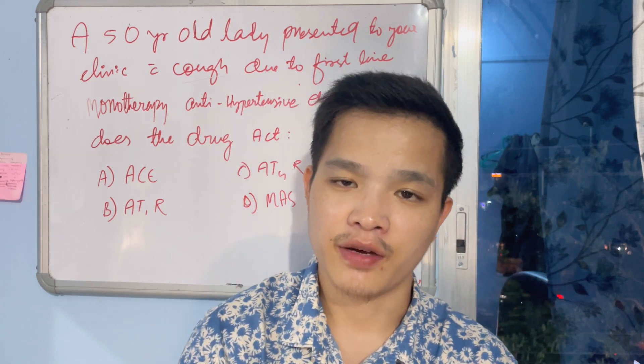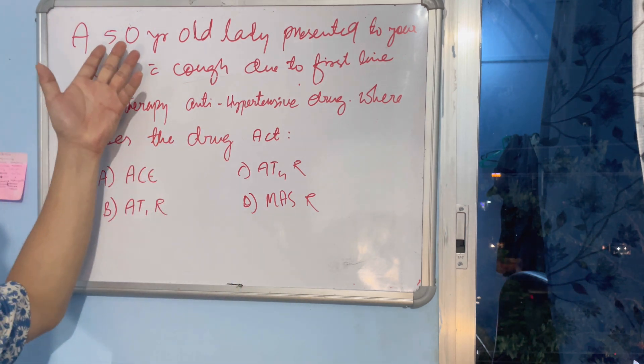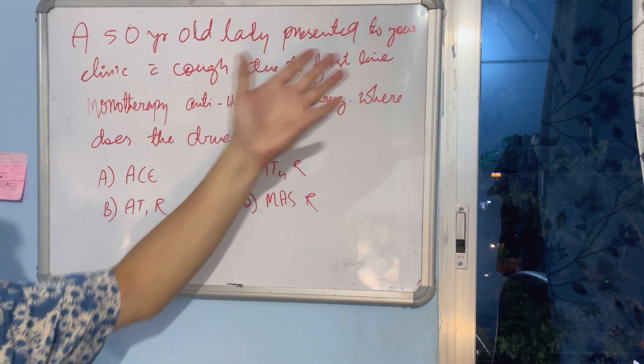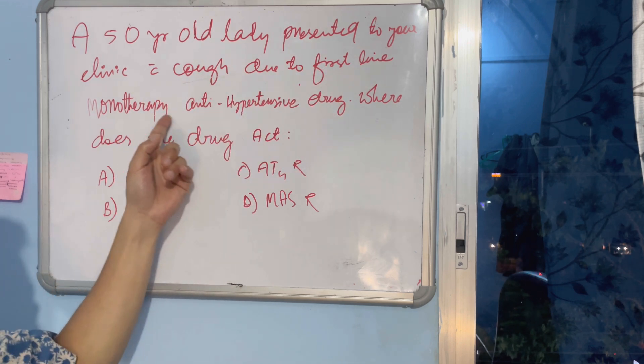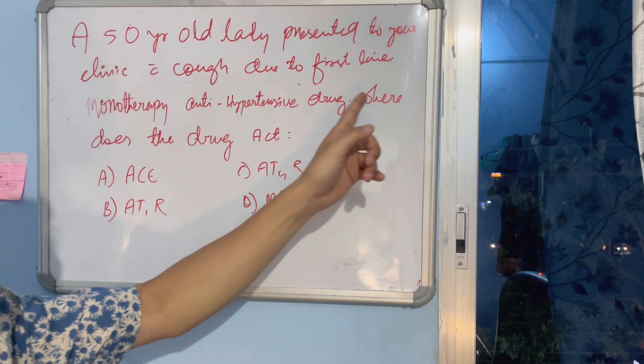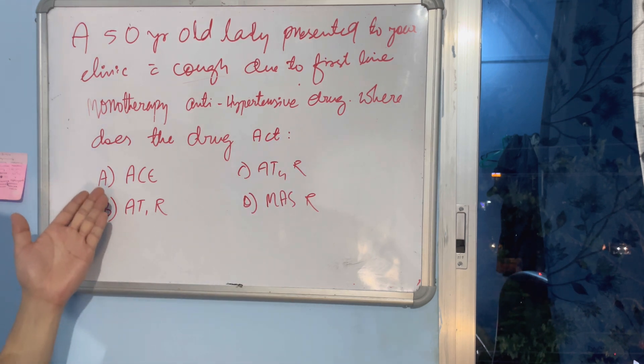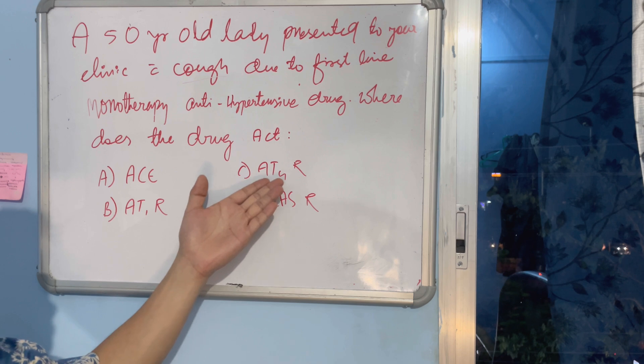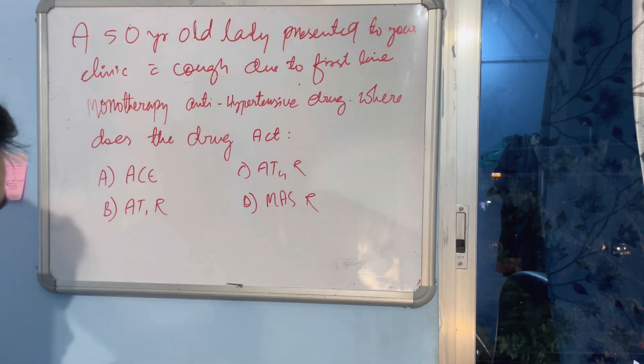I would like to begin with a question I have already written down. The question goes like this: a 50-year-old lady presented to your clinic with cough due to first-line monotherapy antihypertensive drug. Where does the drug act? Option A: ACE, Option B: AT1 receptor, Option C: AT2 receptor, Option D: MAS receptor.